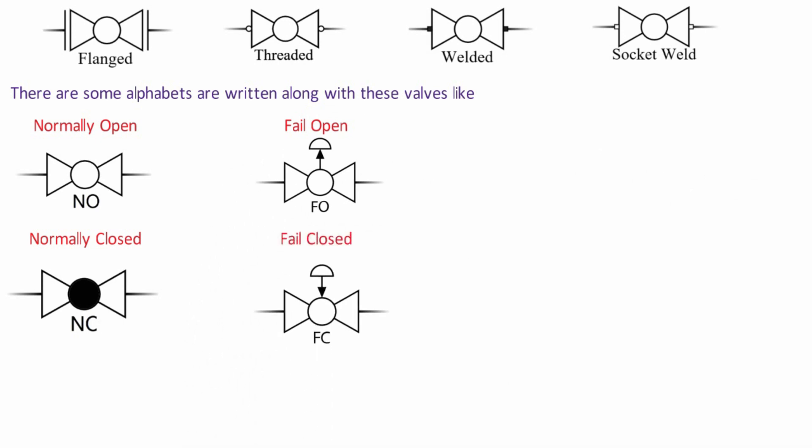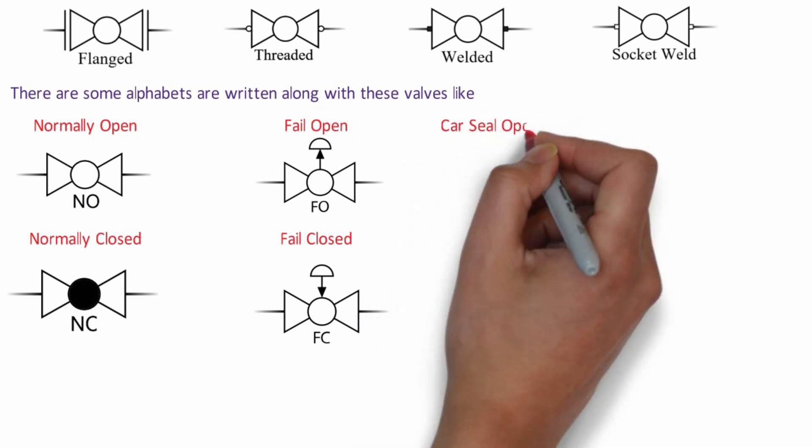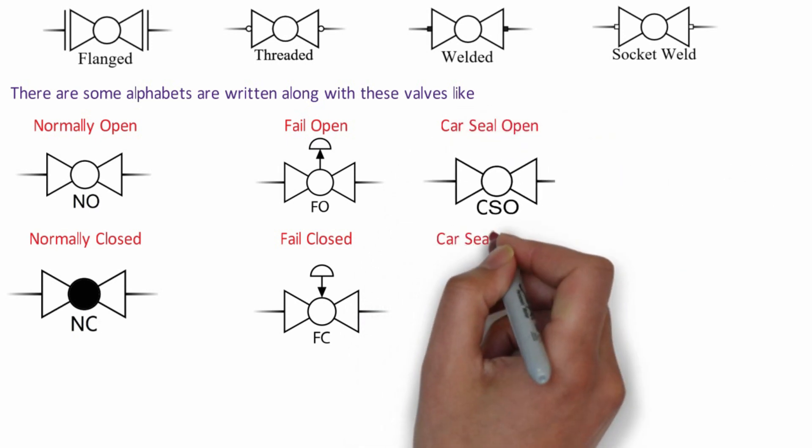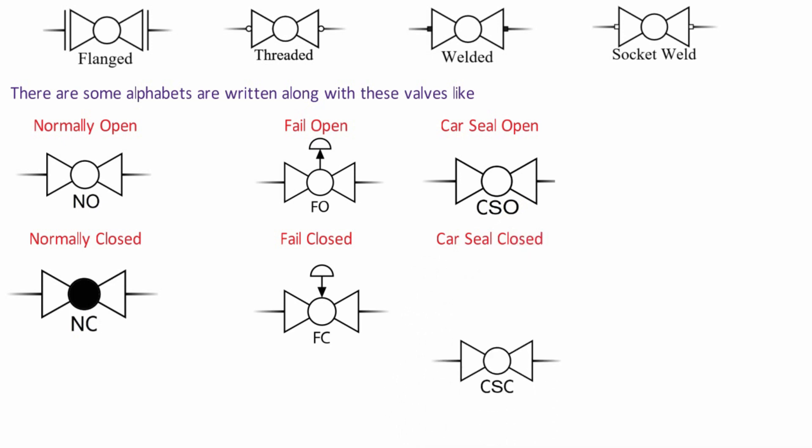Fail open or fail close valves would open or close at a loss of signal or power. These types of valves require air pressure to stay open or close. CSO-CSC, Car seal open and car seal close. Simple device is used to lock or seal the valve in open and close position to prevent unauthorized operation of valve.